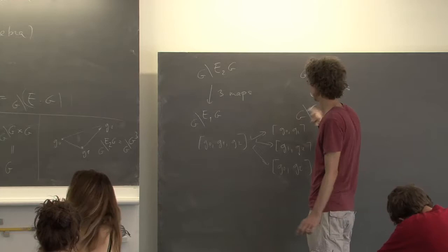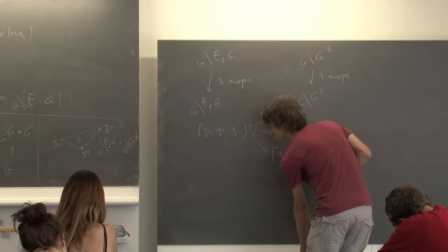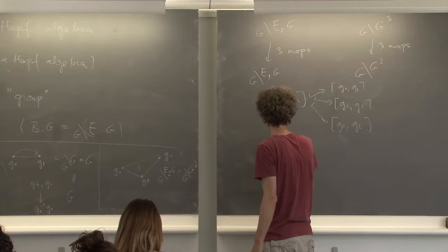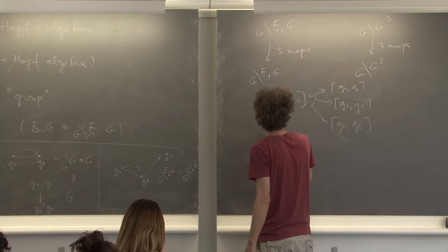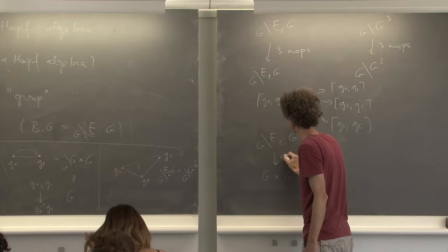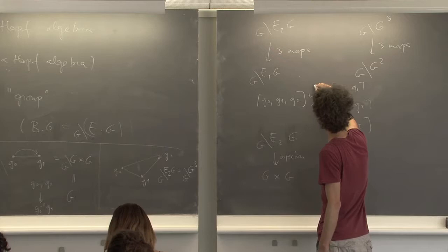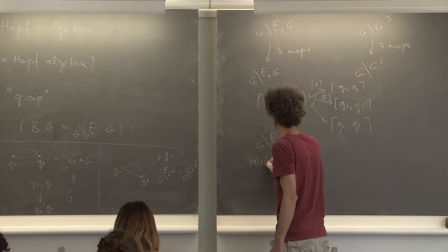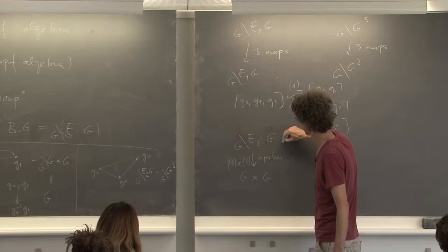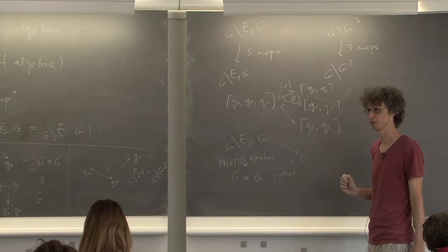Those three maps are just ignoring one vertex — erasing one of those vertices or looking at what's happening at an edge. So the class of (g0, g1, g2) is sent to either the class of (g0, g1), or the class of (g1, g2), or the class of (g0, g2). Those are the three maps. And now finally — this gives us a bijection between E2G mod G and G times G, using map 1 and map 2. But we also have a third map going to G, and that's the product.